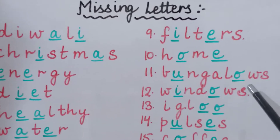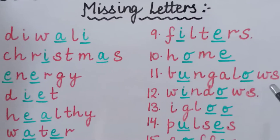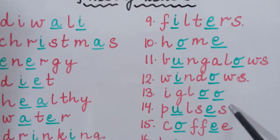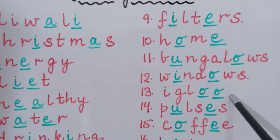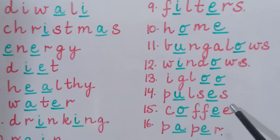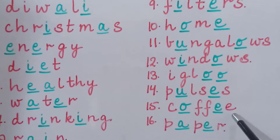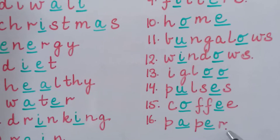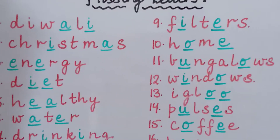The eleventh word is B-U-N-G-A-L-O-W-S, Bungalows — bungalows are very big houses. Twelfth word is W-I-N-D-O-W-S, Windows. Thirteenth word is I-G-L-O-O, Igloo — igloo is a kind of house built in very cold places, made of ice bricks. Fourteenth word is P-U-L-S-E-S, Pulses. Fifteenth word is C-O-F-F-E-E, Coffee. And the last word is P-A-P-E-R, Paper.